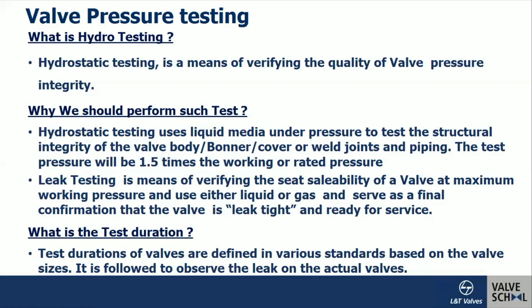In some cases, the testing process and the testing parameters are defined in the valve standard itself. In some cases, the product standards refer to other testing standards. For example, API 600, the valve gate manufacturing standard, refers to another standard, API 598, wherein we have to see what are all the testing processes and testing parameters the manufacturer has to confirm.